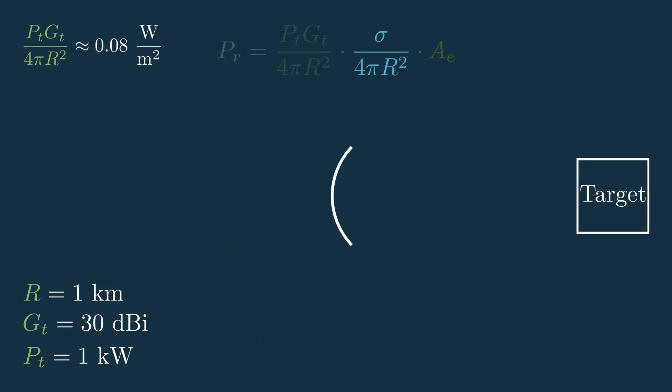Onto the second part. This second component defines our target and the path back to the radar. Now you may notice that we again have this 1 over 4π R squared, or 1 over the surface area of a sphere, which makes sense because the signal has to travel this distance R back to the antenna for us to detect the target.